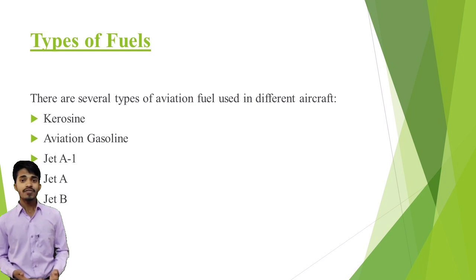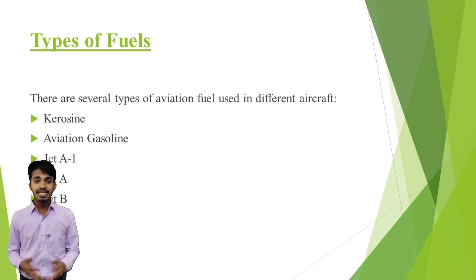There are several types of aviation fuels used in different aircraft, like kerosene, aviation gasoline, Jet A1, Jet A, and Jet B.